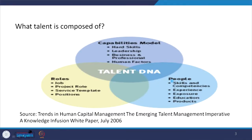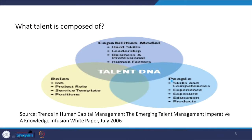The third dimension is people. Under trends in human capital management, the emerging talent management imperative is about people having skills and competencies. You connect the job role with hard skills and then develop skills and competencies. Roles, capabilities, and people together — this is called the Talent DNA.